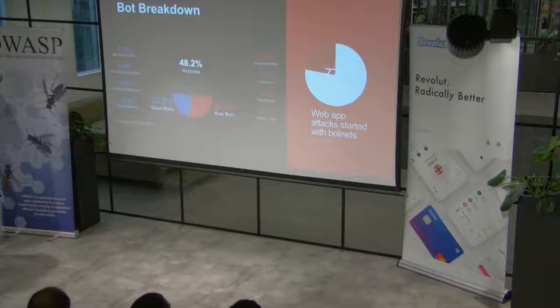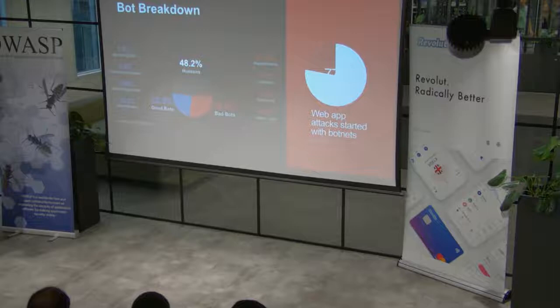The majority of layer 7 web app attacks are fully automated. And of course this probably goes without saying, because it's economies of scale.